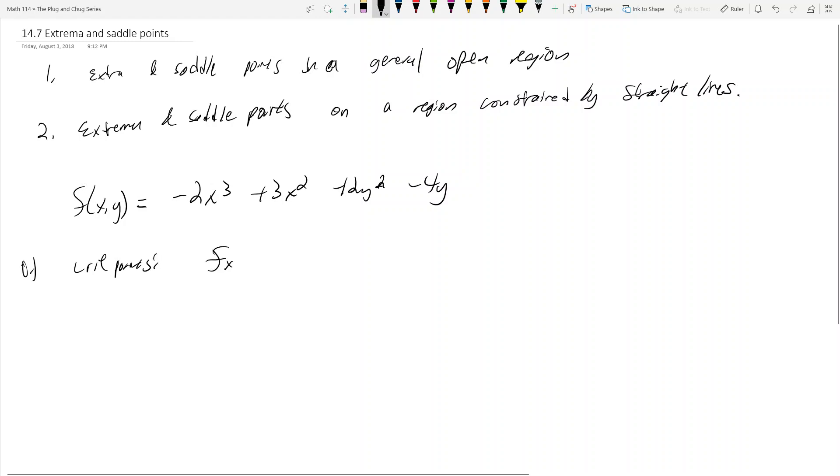And that's where the partial of x equals the partial of y equals 0. So here I got f sub x, or the partial of x, is negative 6x squared plus 6x. And then the partial of y is f sub y, and that's equal to 4y minus 4.